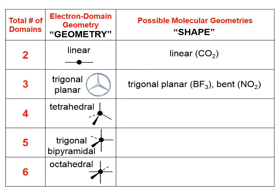For the trigonal planar electron domain geometry, if each domain has an atom hanging off, the shape is also trigonal planar. If only two of the domains have an atom, the molecular geometry is called bent. For the molecule NO2, with N in the middle and an oxygen on two of the domains, the shape is bent — with an unshared electron pair on the third domain.